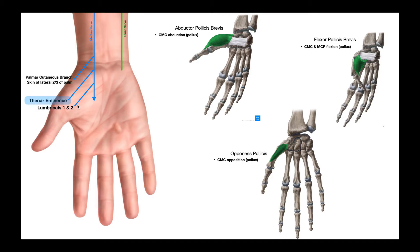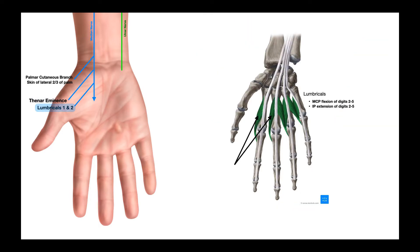The last branch here is a motor branch that goes to the lateral lumbricals — that is lumbricals one and two. Remember that lumbrical muscles allow flexion of digits two through five at the metacarpophalangeal joints, but extension of these same digits at the interphalangeal joints. These two lumbricals closest to the thumb side, on the lateral side of the hand, are going to be innervated by this motor branch coming from the median nerve.